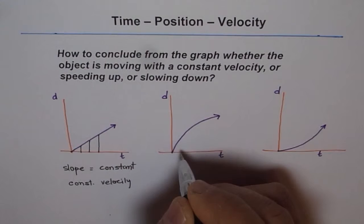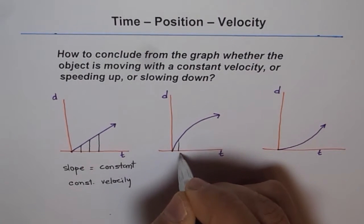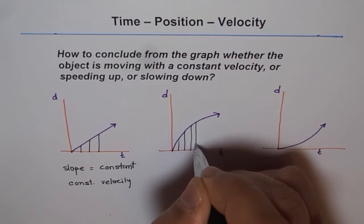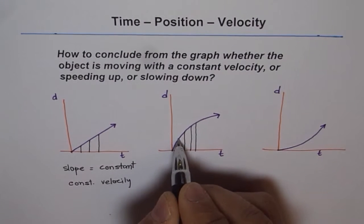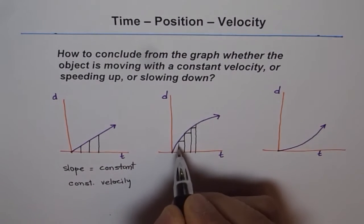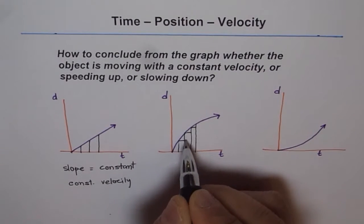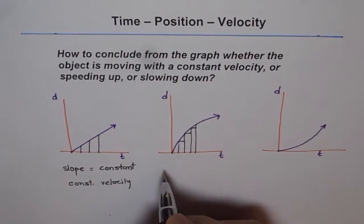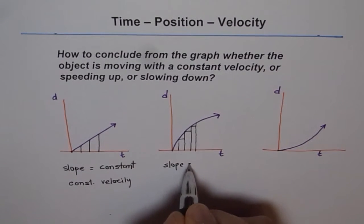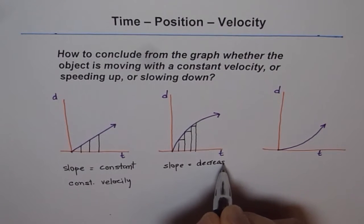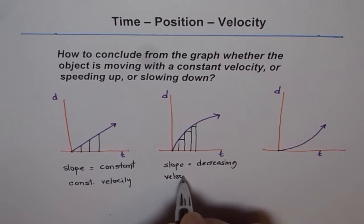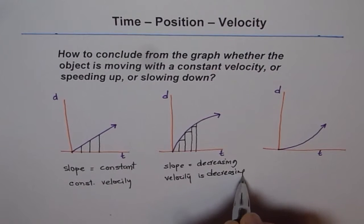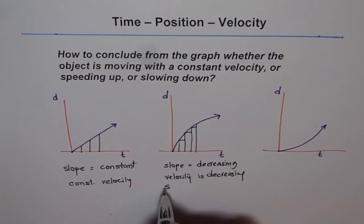Now, in this second case, if I draw triangles at equal intervals of time, you notice that rise over run — the rise is decreasing as we move along. Rise is decreasing. Therefore slope is decreasing. If slope is decreasing, then velocity is decreasing, and if velocity is decreasing, then we say that the object is slowing down.